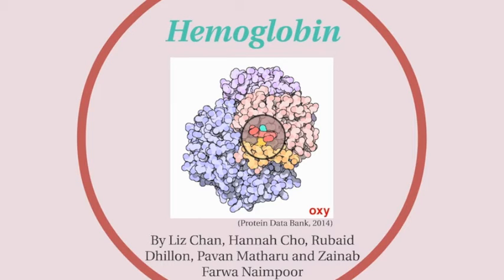In this video, we will be exploring how our red blood cells play an important role in how we breathe. We will explain the structure of the protein in our red blood cells called hemoglobin, which is crucial in the process of gas exchange. Gas exchange is how oxygen and carbon dioxide enter and exit our bodies during breathing.